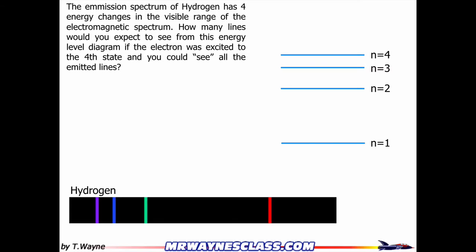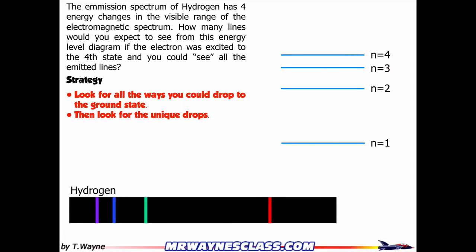All right, so I've got this energy level diagram, here are the different energy levels, and here's going to be my strategy. What I'm going to do is I'm going to look at all the ways I could drop from n equals 4 to n equals 1, and then I'm going to look for all the unique drops in my collection.